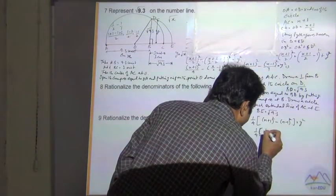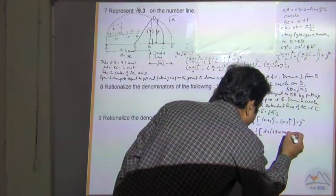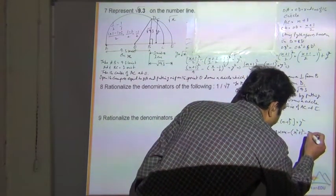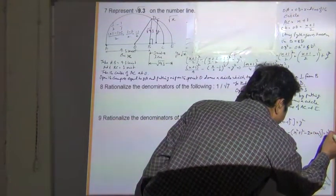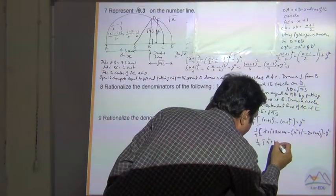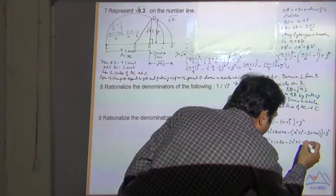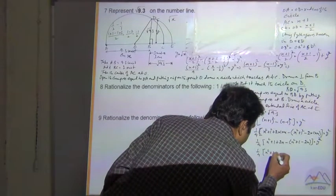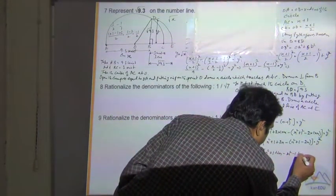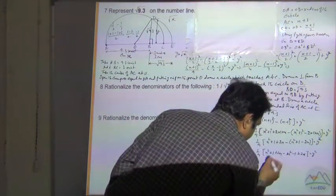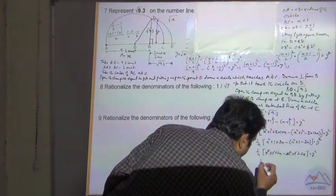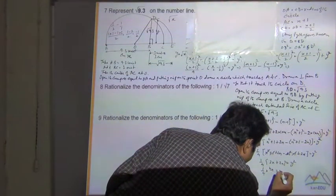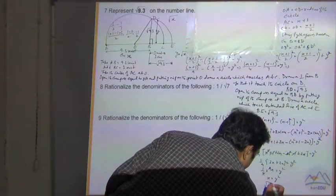So expanding: x squared plus 1 plus 2x minus x squared minus 1 plus 2x equals 4y squared. The x squared terms and constant terms cancel, leaving 4x equals 4y squared. So 1 by 4 multiplied by 4x equals y squared, giving x equals y squared. Therefore under root x equals y.